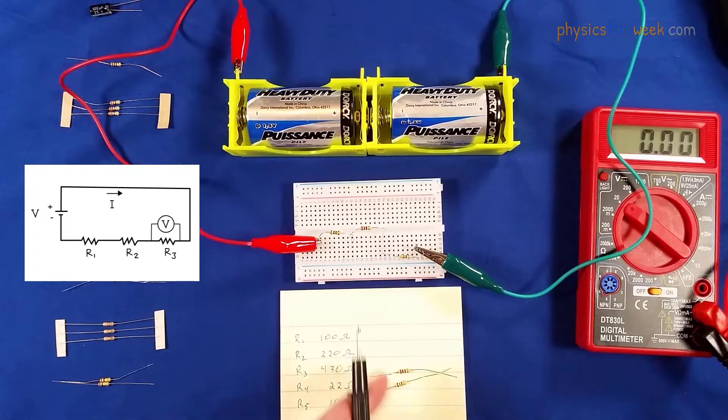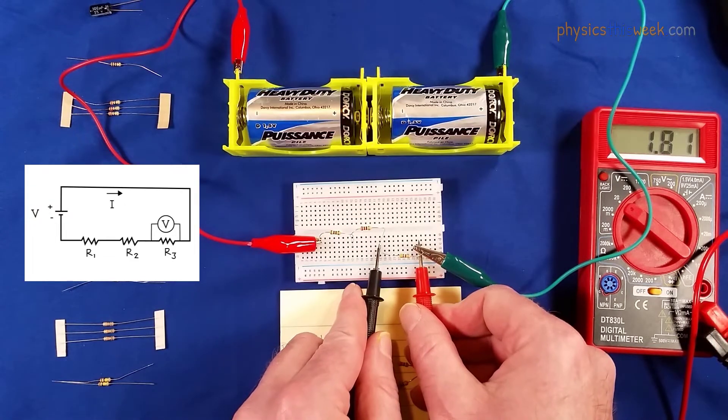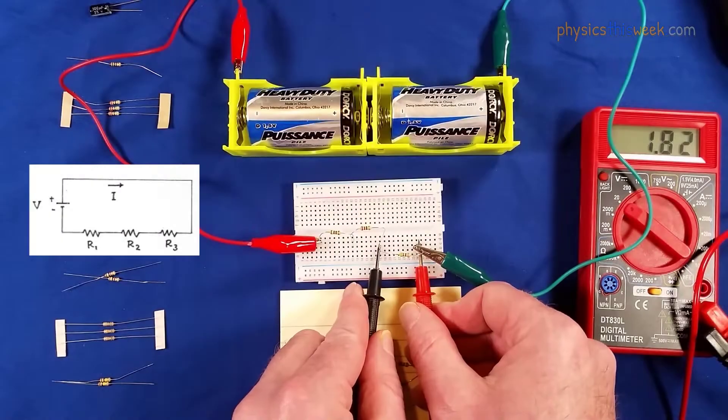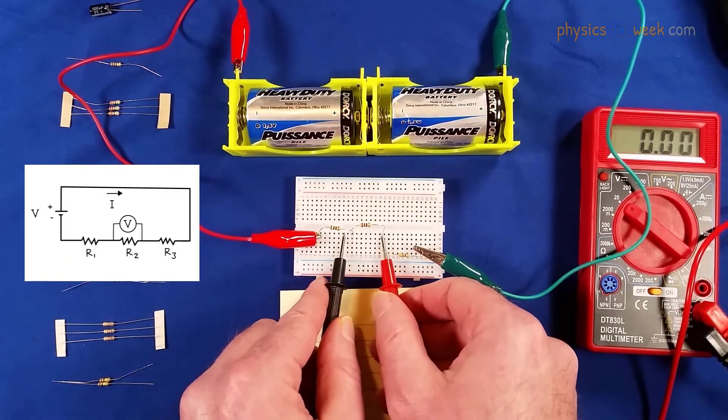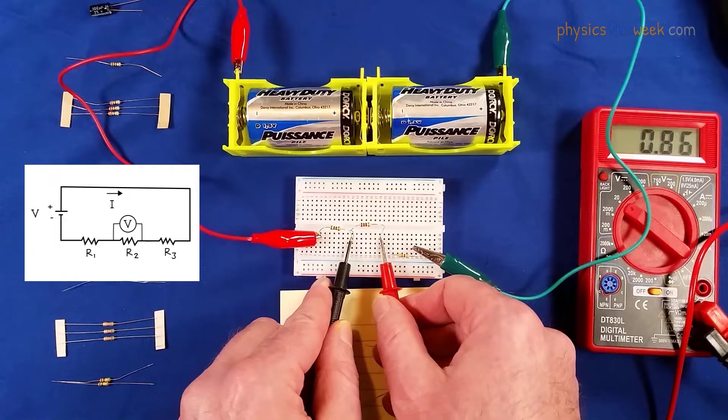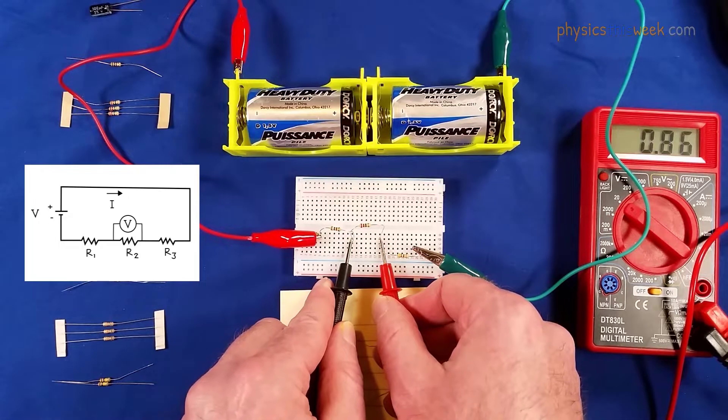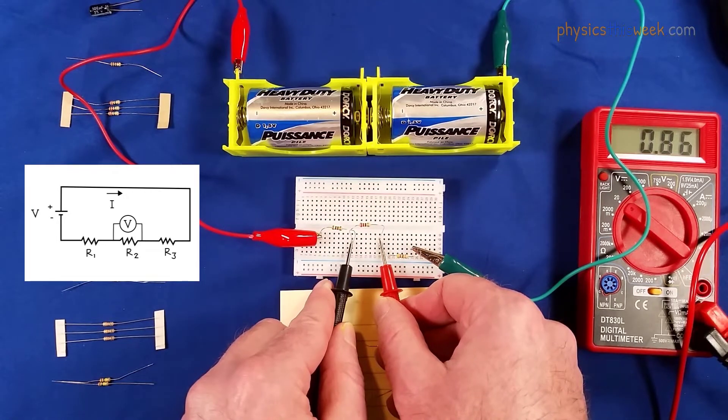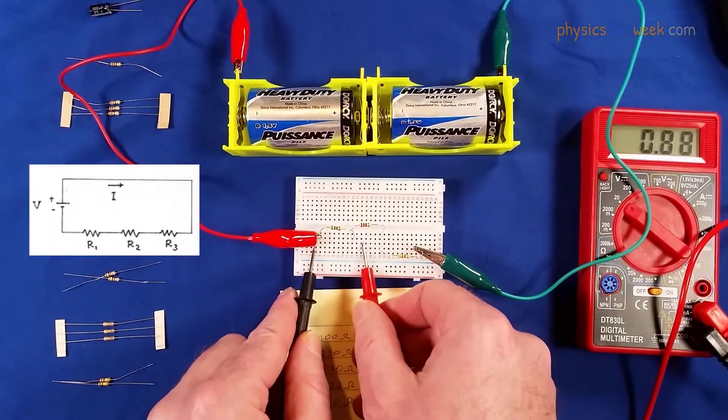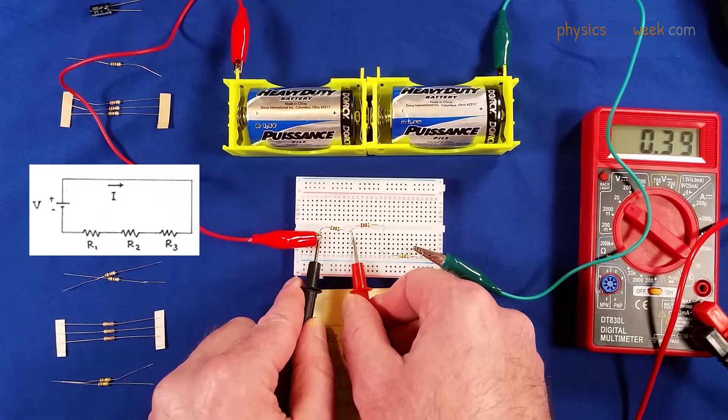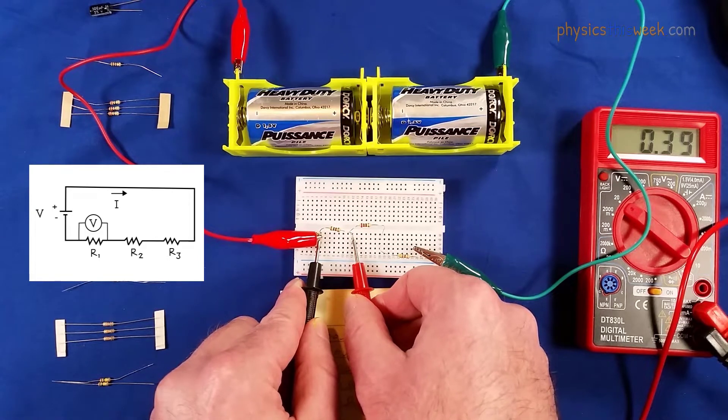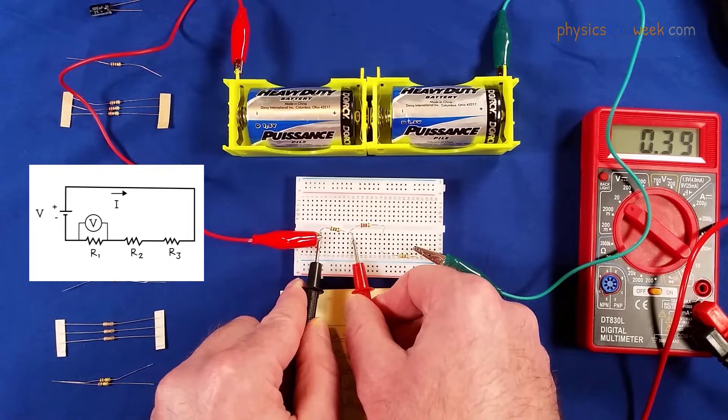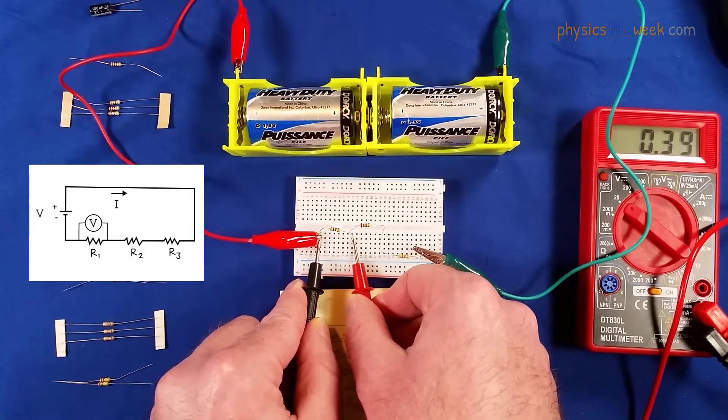For the second one, it doesn't matter where I touch it as long as I've got a good solid connection. There's 0.86 volts. And over here I've got 0.38, 39. Go ahead and record that value for it.